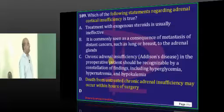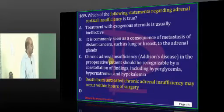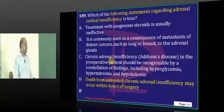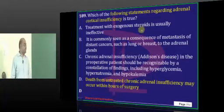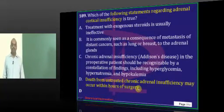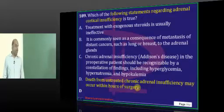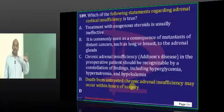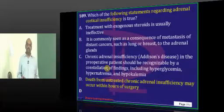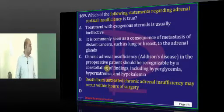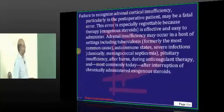Coming to adrenocortical insufficiency — how do you recognize it? Suppose you have done surgery and the patient passes away unexpectedly. That is sometimes how you identify untreated chronic adrenal insufficiency, because post-operatively you expect good adrenal activity, which is basically missing.